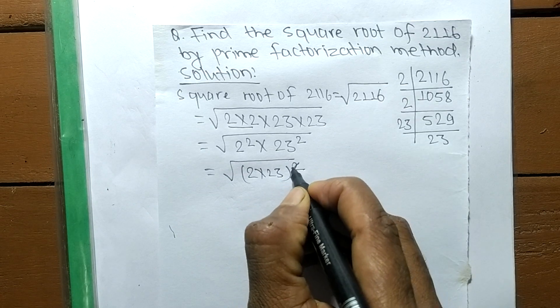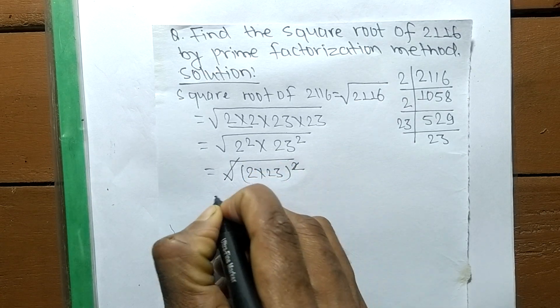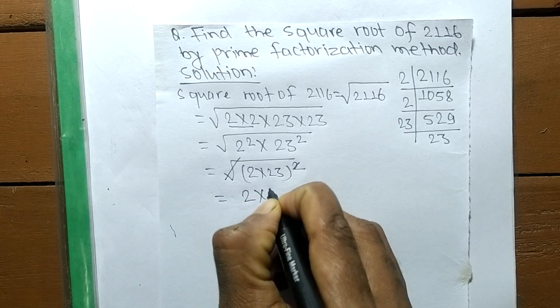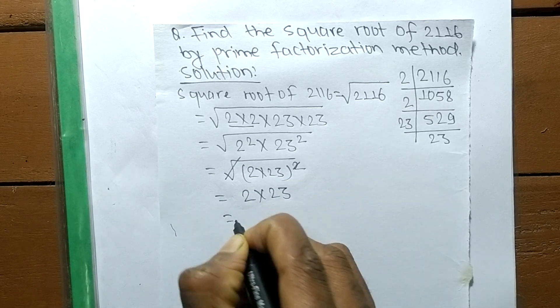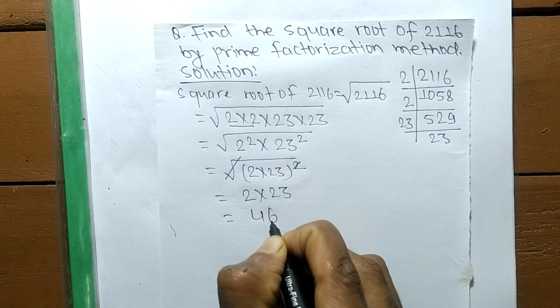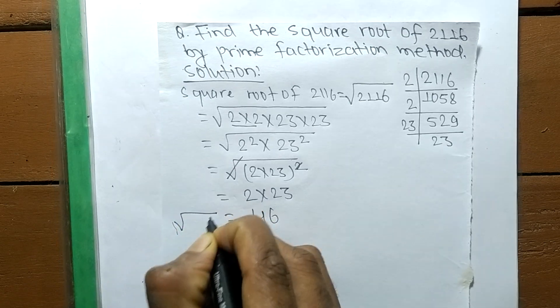A square and a square root cancel each other, so we get 2 times 23, which is 46. So the square root of 2116 is 46.